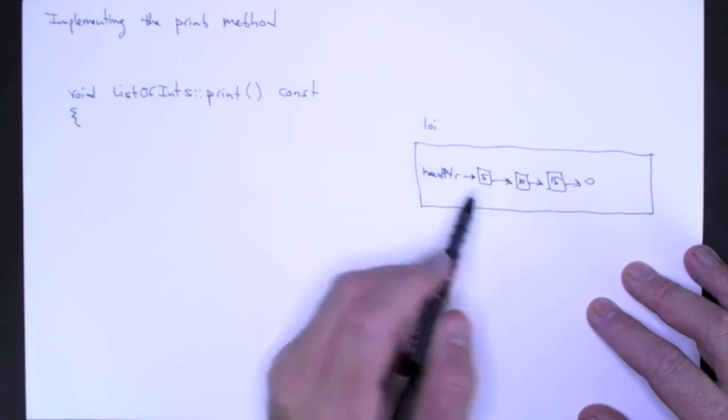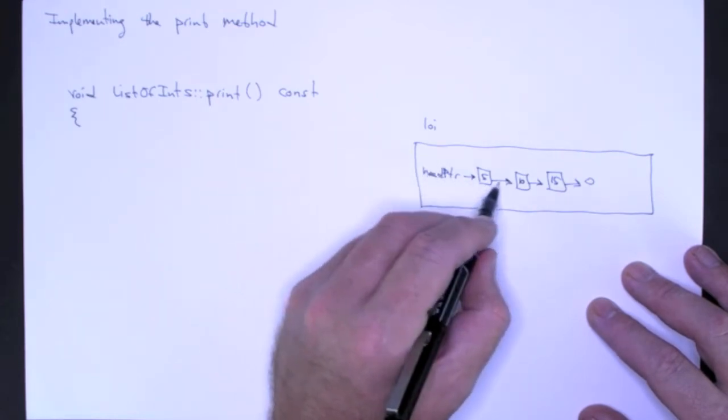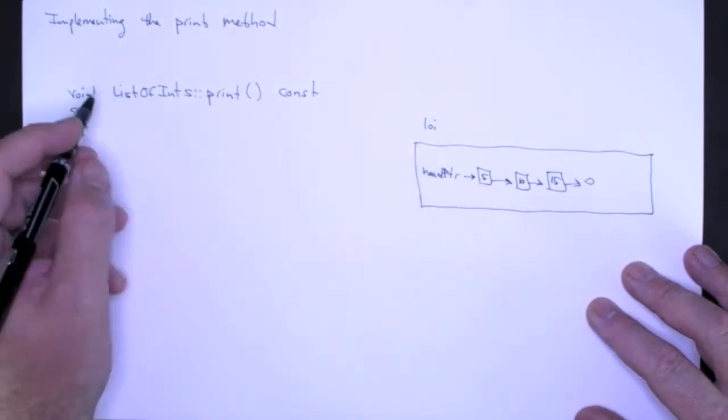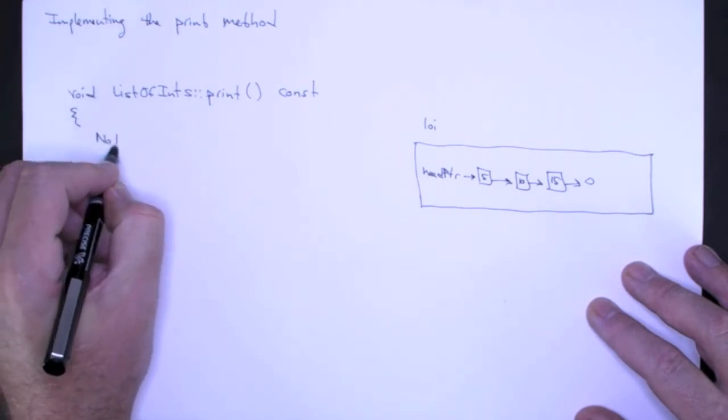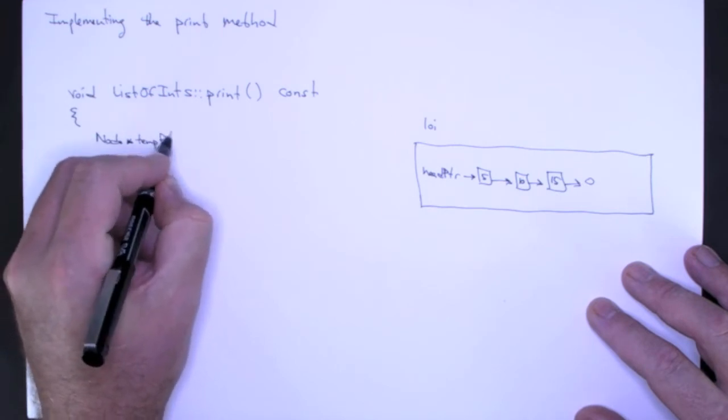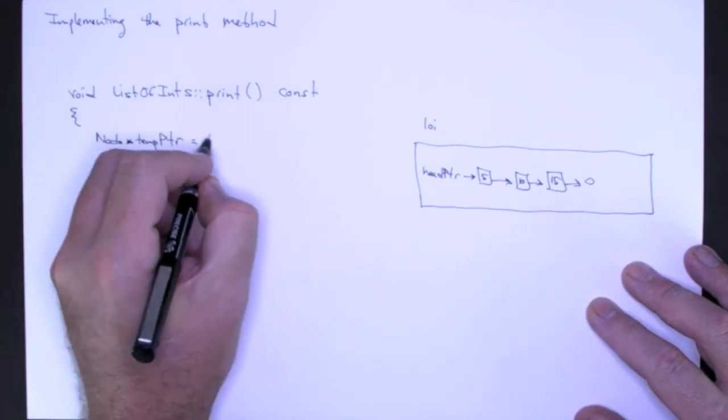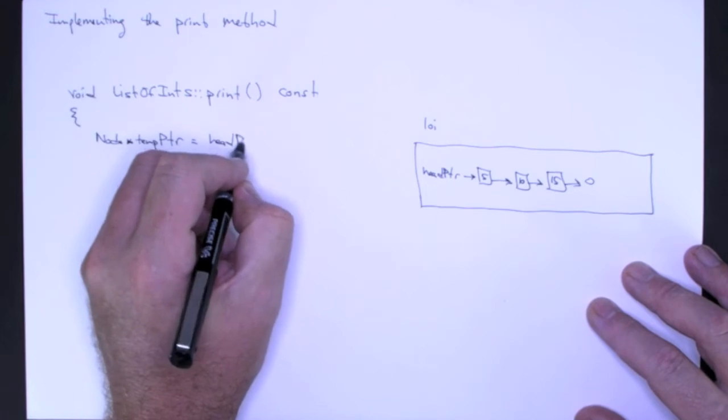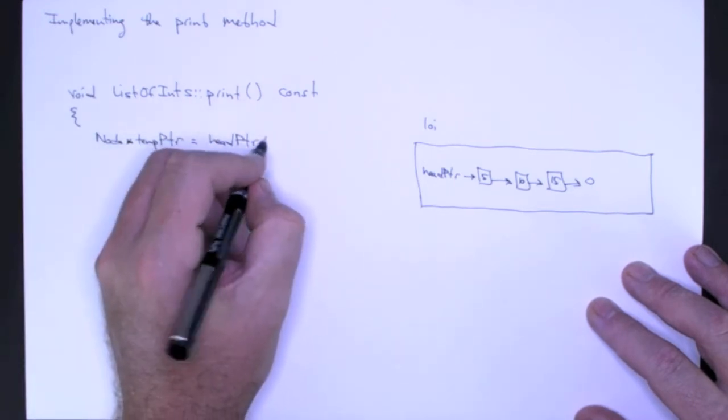Well this involves a traversal, and of course you're going to start at the beginning of the list. We're going to use temp pointer for that traversal, and it should start at the head of the list, which head pointer points to.